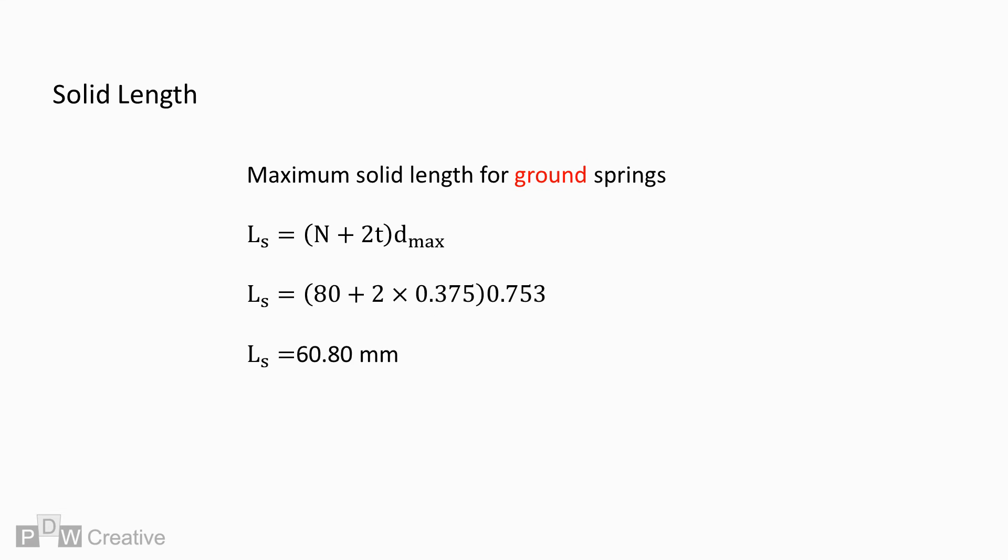So for this example, the solid length works out at 60.8 mm exactly. There is no tolerance for this length. This is simply the maximum 100% compression reference for basing the shortest working length at 80% compression.